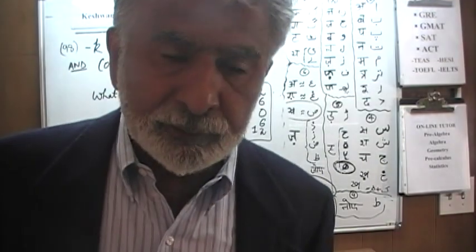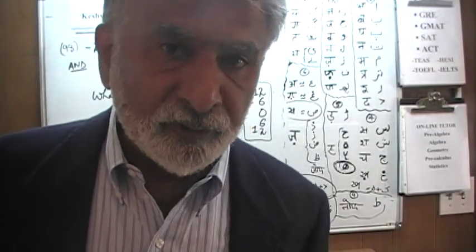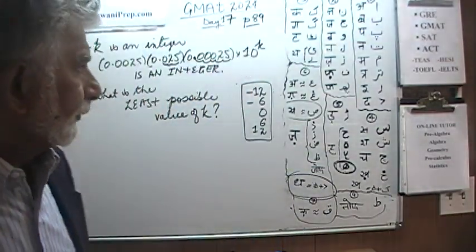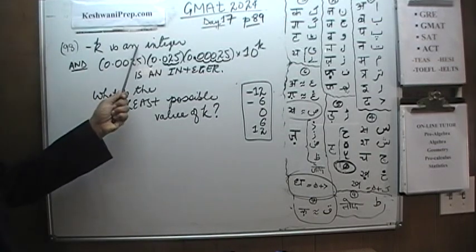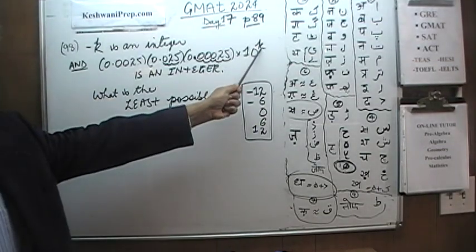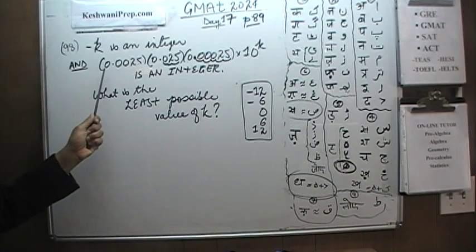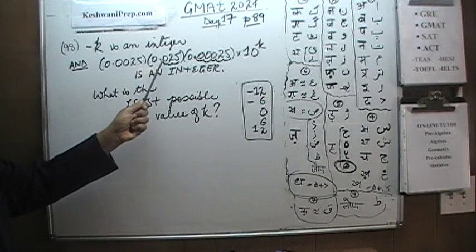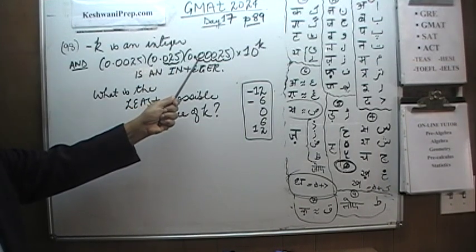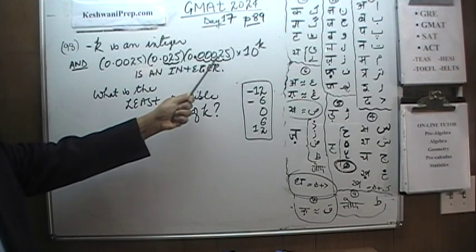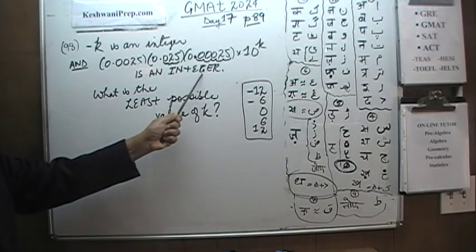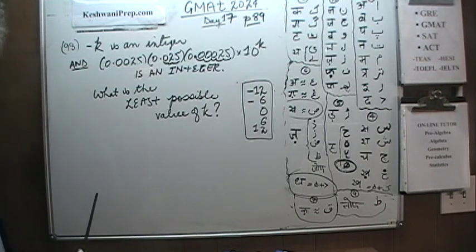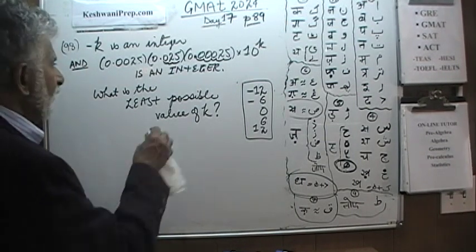As always I am going to read the problem to you, then I am going to get out of the frame, we are going to pause the video, do it yourself, and then we will compare your work against the work that we do together. We are told that K is an integer — whatever K is, it is a whole number. We are further told that 0.0025 times 0.025 times 0.00025 times 10 raised to K is also an integer. The question simply is: what is the least possible value of K in order for this to be true?